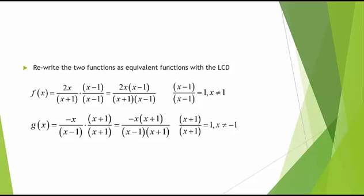Similarly, we can rewrite g(x). g(x) equals negative x over x minus 1, times x plus 1 divided by x plus 1. We obtain negative x times x plus 1 in the numerator, divided by x minus 1 times x plus 1. Since x plus 1 divided by x plus 1 equals 1 for x not equal to negative 1, we can multiply g(x) by x plus 1 divided by x plus 1 without changing the value of g(x).